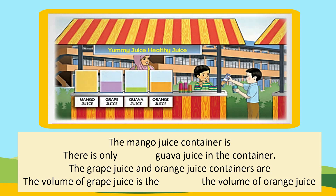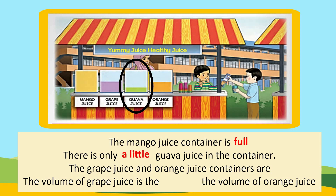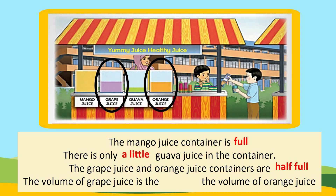The stall is selling mango juice, grape juice, guava juice, and orange juice. Look at the juice containers. The mango juice container is full. There is only a little guava juice in the container. The grape juice and the orange juice containers are half full. The volume of grape juice is the same as the volume of orange juice.